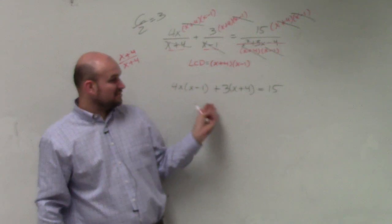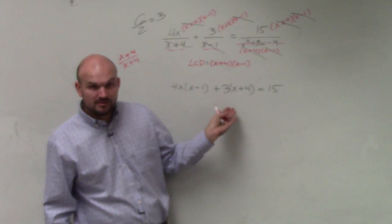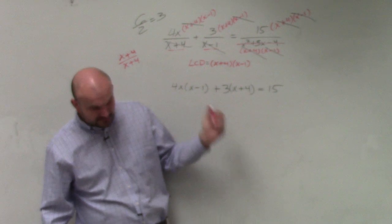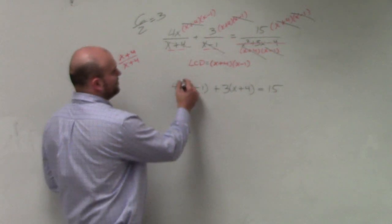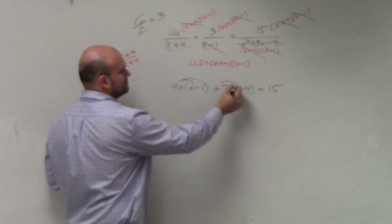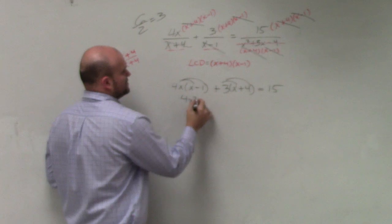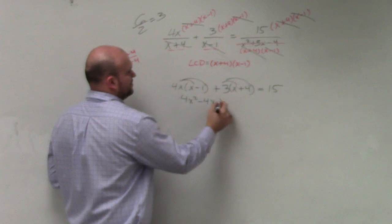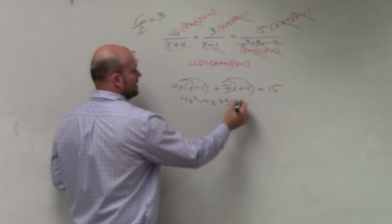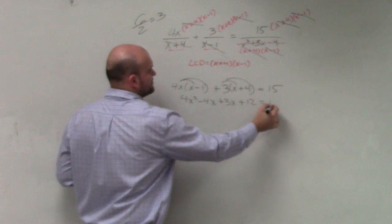4x times x minus 1 plus 3 times x plus 4 equals 15. Is this much easier? Does this look much easier to solve than before? Yes? Okay. So now, I have to apply distributive property.